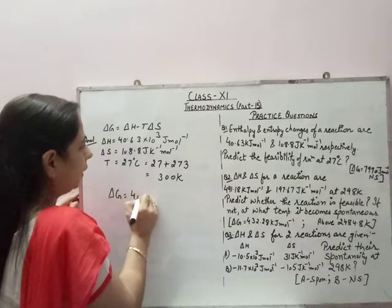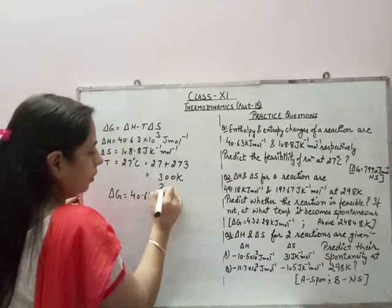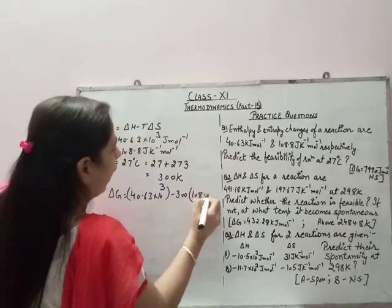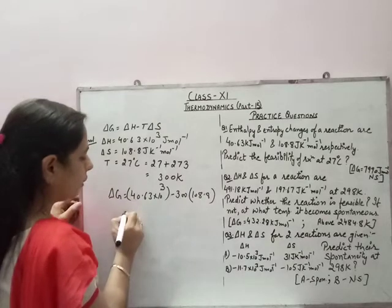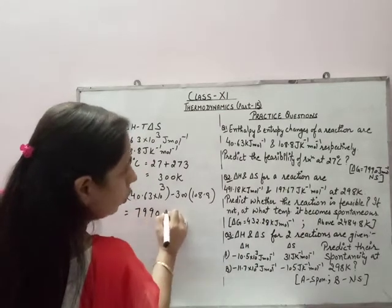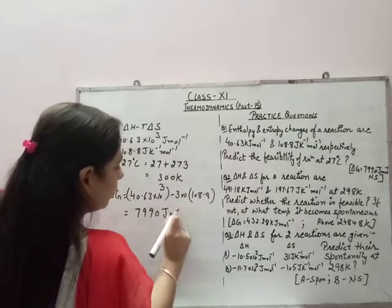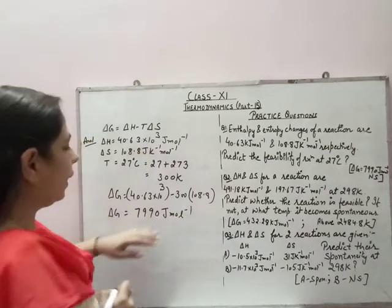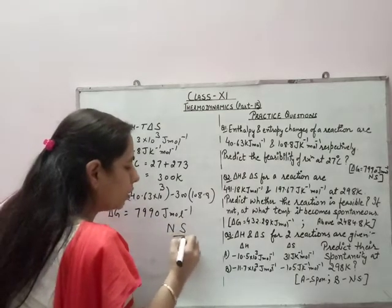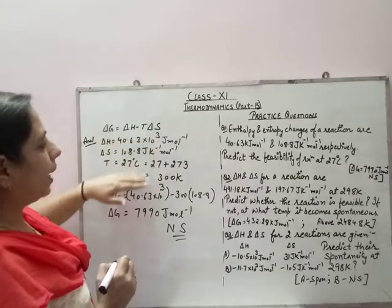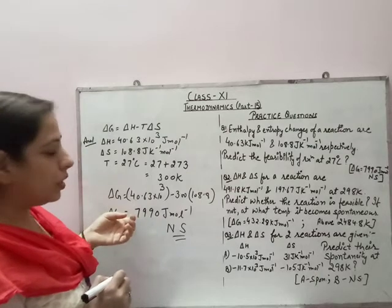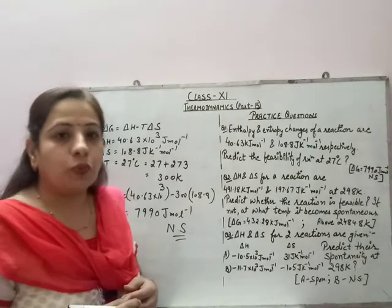Now applying the formula: delta G equals delta H minus T delta S. T is 300 and delta S is 108.8 joule per Kelvin per mole. On solving, we get the value of delta G to be 7990 joule per mole. As the answer indicates, the value of delta G is positive. If delta G is positive, the reaction is non-spontaneous. So by substituting the values of delta H, delta S, and temperature into the formula, we can tell whether the reaction is spontaneous or not.